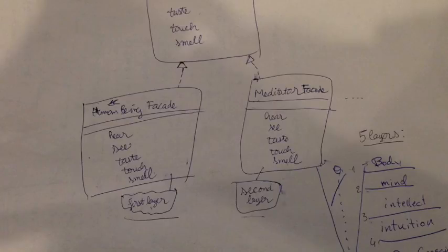How to model 5 layers of human beings in information technology perspective. Now I will model 5 layers of human beings following the design pattern of facade pattern.